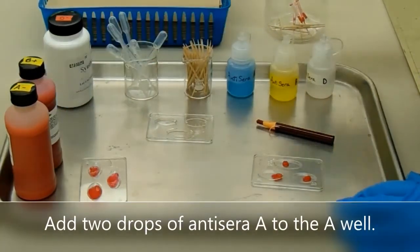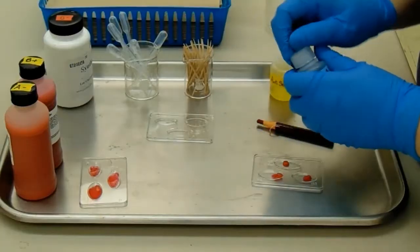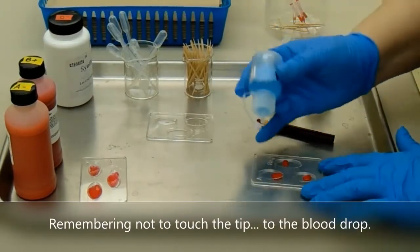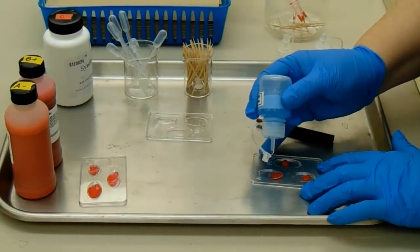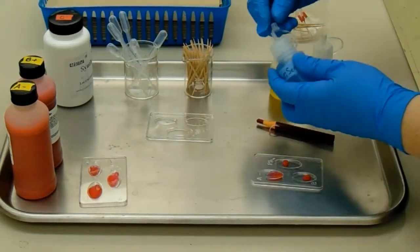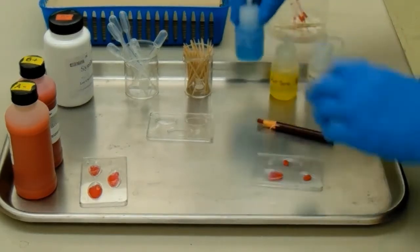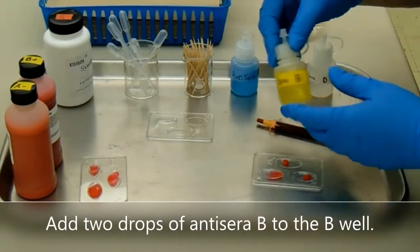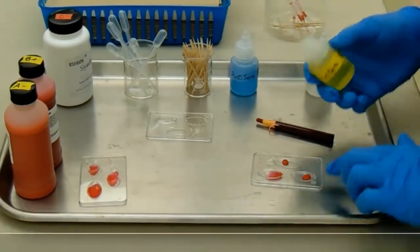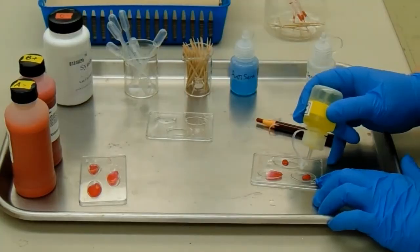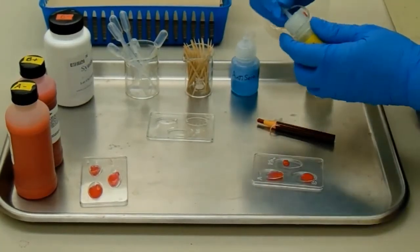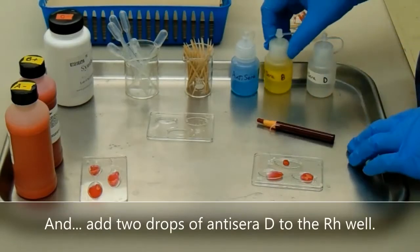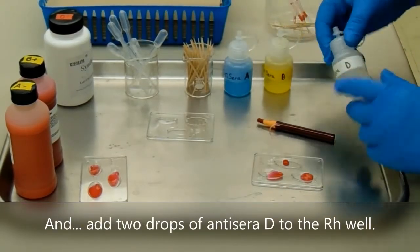Add two drops of antisera A to the A well, remembering not to touch the tip to the blood drop. Add two drops of antisera B to the B well, and add two drops of antisera D to the RH well.